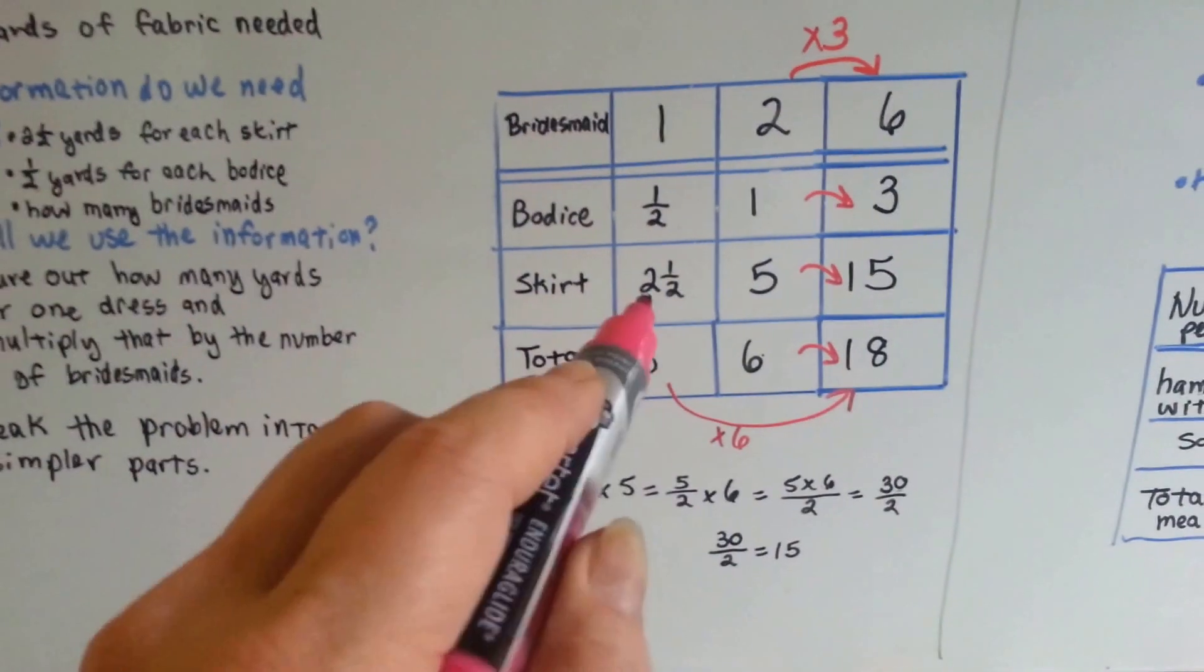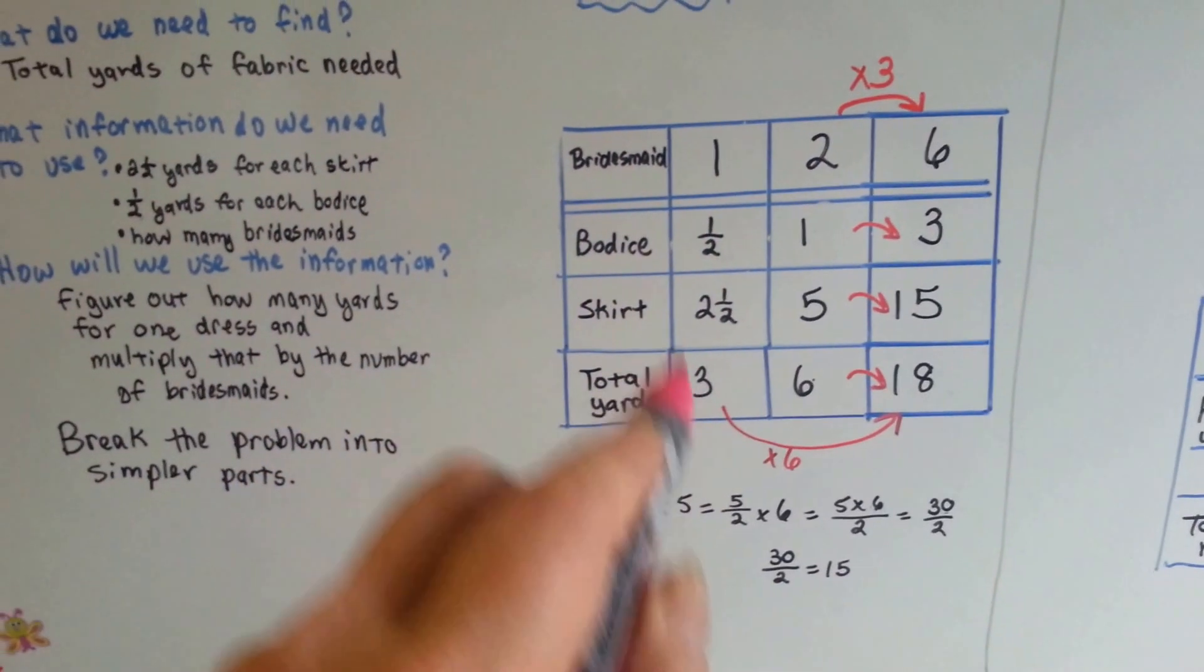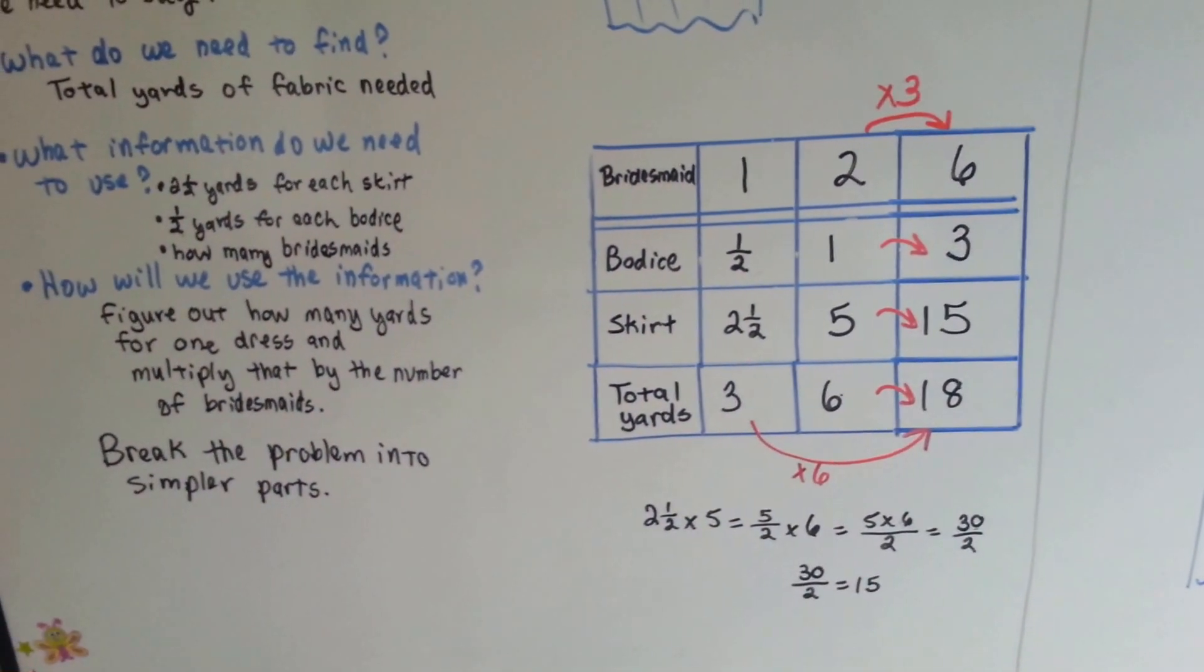So that was pretty simple. We were able to just figure out what she needed for one, and then we were able to quickly figure out what she needed for six.